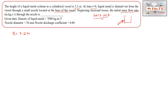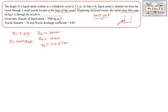The nozzle diameter d_n is given as 30 mm, which gives a nozzle radius of 15 mm, or 15 × 10⁻³ meters. The density ρ is given as 7000 kg/m³. The nozzle discharge coefficient Nd is given as 0.80.